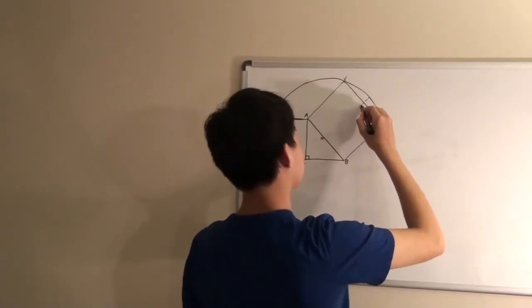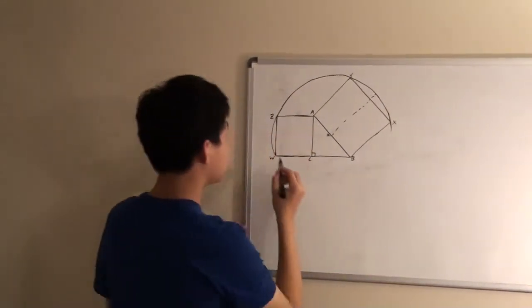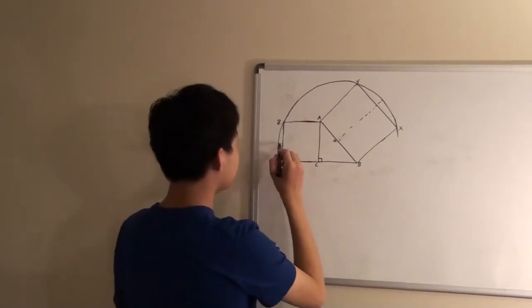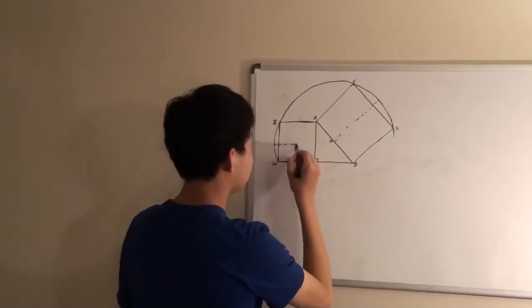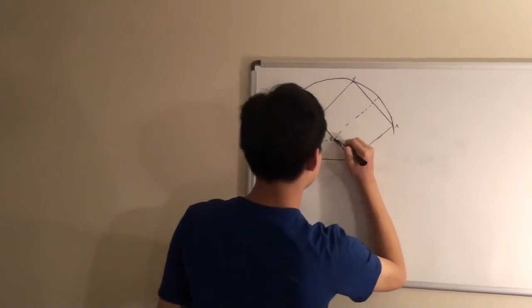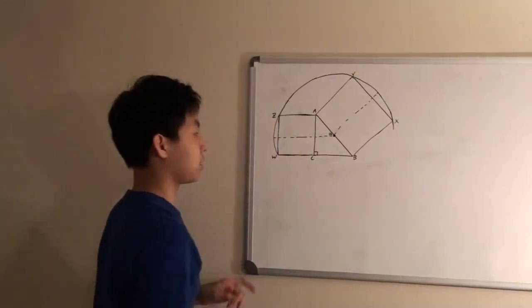So draw something roughly like that from XY and from WZ. It will be somewhere on the hypotenuse.